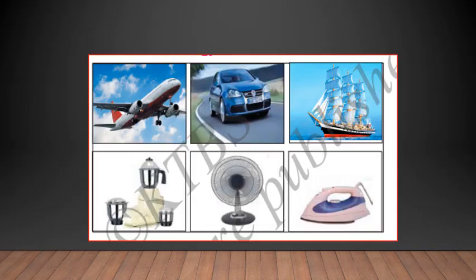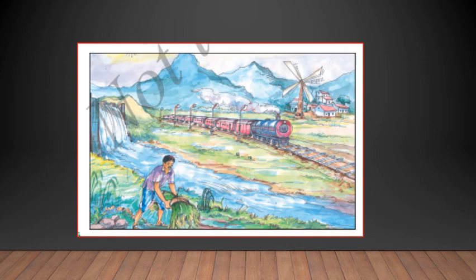Flying aeroplanes in the sky, running vehicles on land, sailing boats or ships on water, and electrical appliances used to ease our daily work — all use one or the other form of energy. The aeroplane, vehicles, ship, boat, mixer, table fan, and iron box all use different forms of energy to make our life easier. Activities happen not only by human beings but also naturally in the environment, and energy is essential for all these activities.